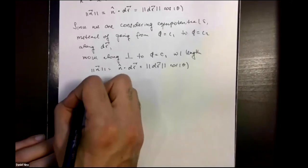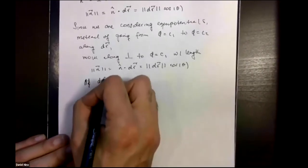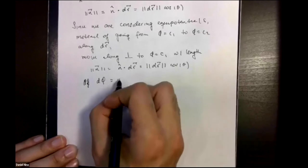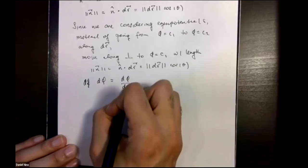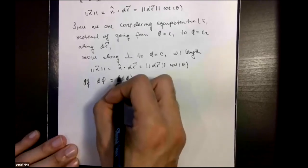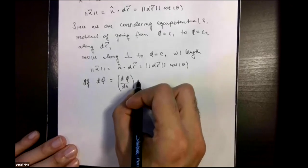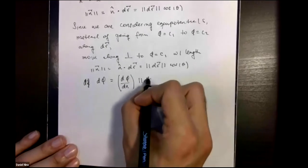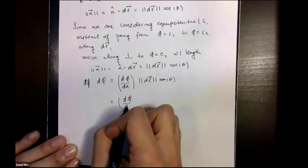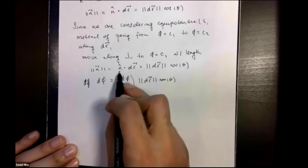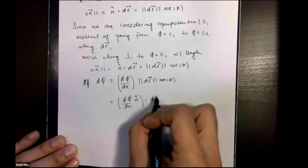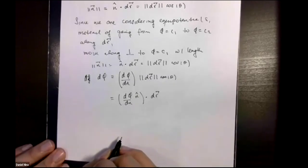So that means our change in equipotential is now equal to the change along the normal times the length of our path. This is equivalent because this is the same thing as the dot product — these two expressions are equivalent.